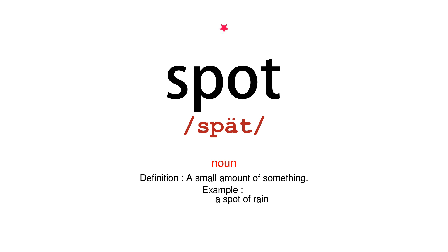Noun Definition – a small amount of something. Example – a spot of rain.